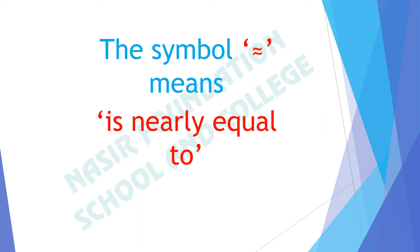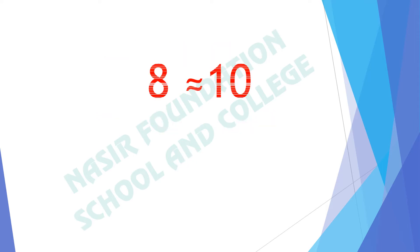This symbol means 'is nearly equal to.' If we are writing two numbers that are not exactly equal, we use this sign to round off the numbers. For example, 8 is nearly equal to 10, and 3 is nearly equal to 0.